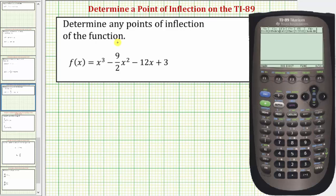Welcome to a tutorial on how to determine a point of inflection on the TI-89 graphing calculator. A point of inflection is a point on the function where it changes concavity, meaning it changes from concave down to concave up, or from concave up to concave down.